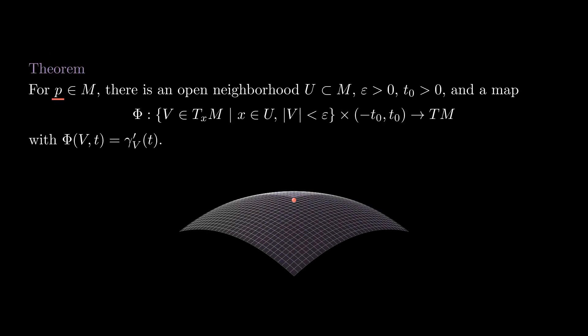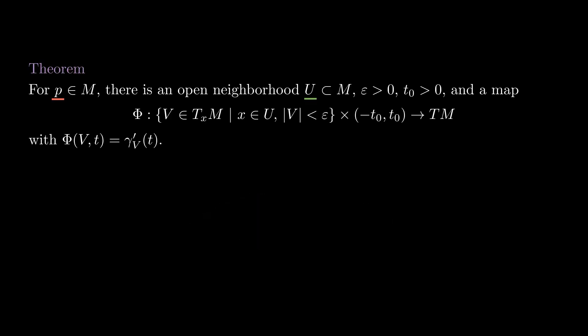We then take the flow of the vector field g around the zero vector at a point p of our manifold. This means there is an open set u around p, a positive epsilon, a positive time t0, and the smooth map phi from the set of vectors v tangent to the manifold at u, having length less than epsilon, times the interval minus t0 to t0 to TM, with phi of vt equal to gamma v prime at t.